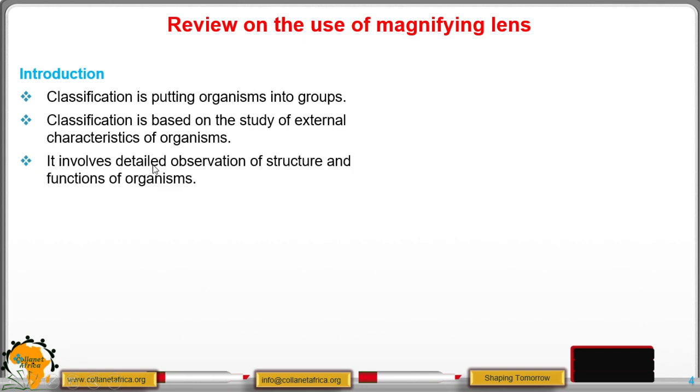Classification involves detailed observation of structure and functions of the organism. So we do not just have to look at the external features, we have also to look at other things which are detailed features and even the functions of that particular organism.